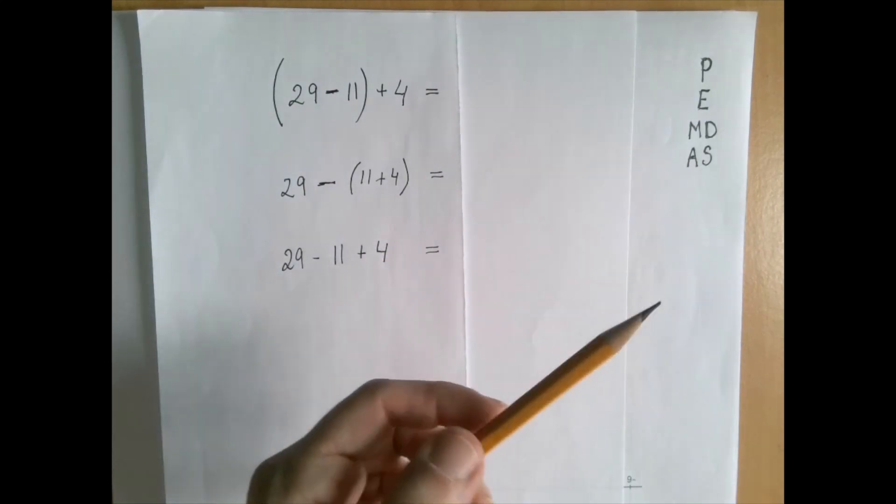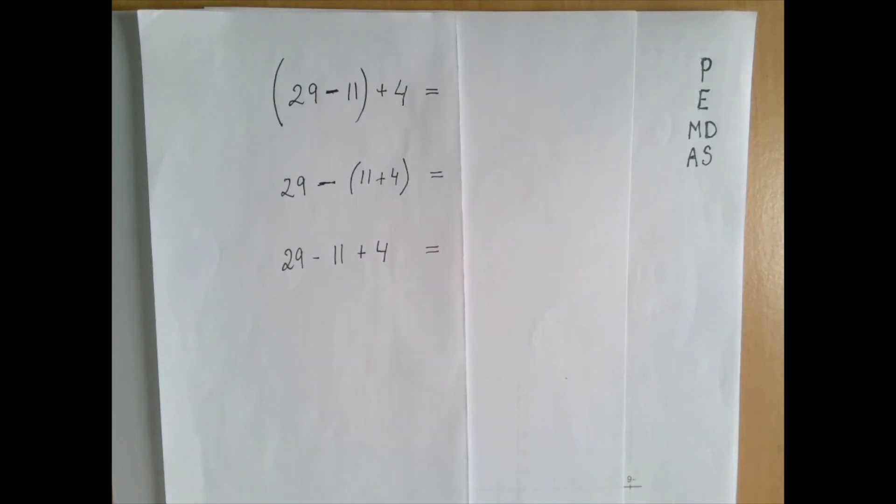When we say PEMDAS, we pronounce the letter A before we pronounce the letter S. And that is a little bit misleading because addition and subtraction are equally strong, so among them we go left to right.